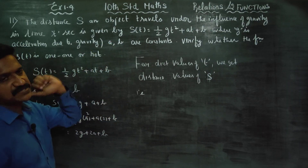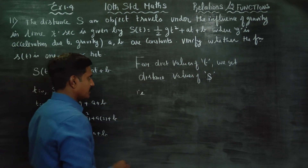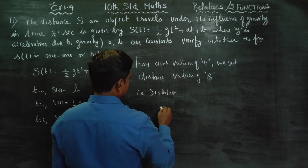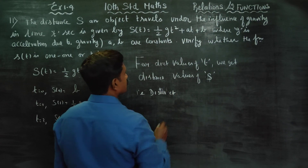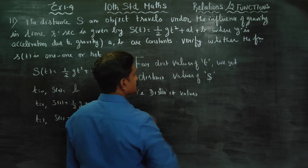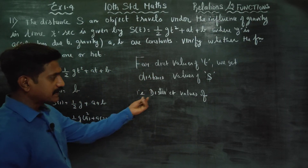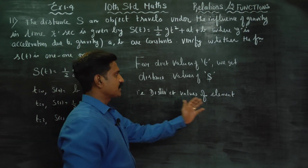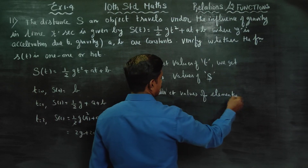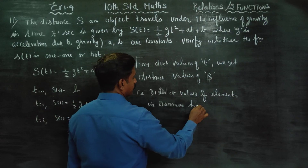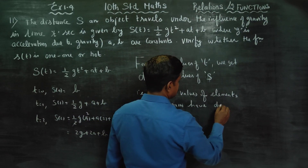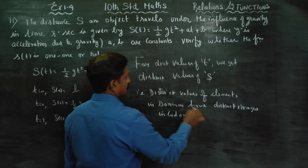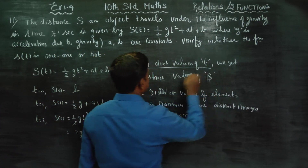That is, whether the function is a one-one — yes, it is a function. Distinct values of elements in the domain have distinct images in the co-domain. That is, for distinct values of t, we get distinct values of s.